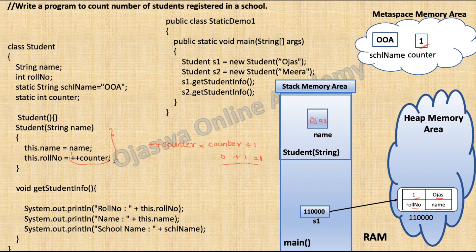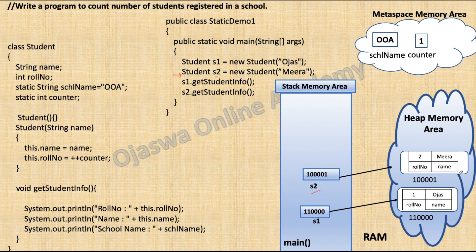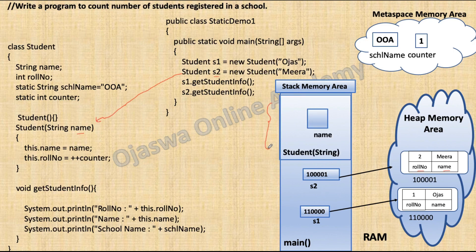After execution of the parameterized constructor is over, memory reserved for its local variable is released from the stack and control comes back. The next statement creates one more object s2. Reference variable s2 is created on the stack and the object is created on the heap. Object s2 will have its own copy of instance variables, so memory for instance variable role number and name is reserved inside object s2. We are passing a string argument 'Mira', hence it gives a call to the parameterized constructor. The argument passed is stored in the local variable belonging to the parameterized constructor, and value 'Mira' is stored in variable name.